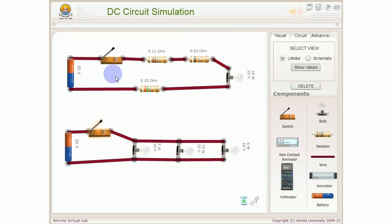Series circuit me agar ek bulb bhi fuse hua ya ek load disturb hua toh poora ka poora circuit disturb ho jayega, the circuit will be incomplete. In case of parallel circuit agar ek bulb bhi fuse hota hai toh baqi ka jo connection hai woh as it is rahe ga. That means yeh bulb fuse nahin hooga, yeh bulb glow rahe ga uski brightness waisi hi rahe gi jaisa pehle thi.